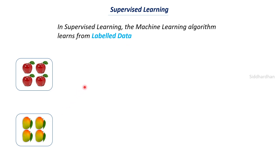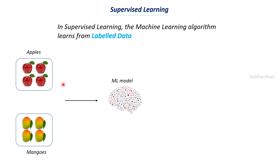When we take a supervised learning approach, we label the dataset. All the images of apples will be labeled as apples and all the images of mangoes will be labeled as mangoes. You can also call this process annotation, because we are annotating all the images. We provide the images and their corresponding labels to our machine learning model, and once it receives the data it tries to map the images to the labels.